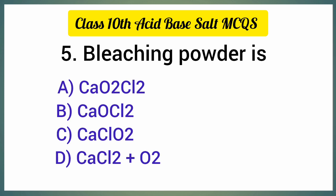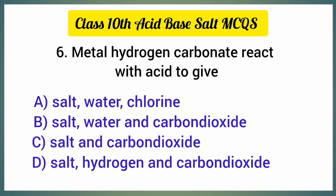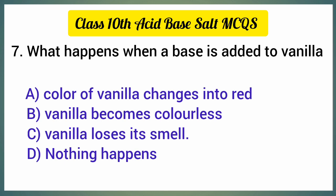Bleaching powder is — the correct option is option B, CaOCl₂. Metal hydrogen carbonate reacts with acid to give — the correct option is option B, salt, water, and carbon dioxide.